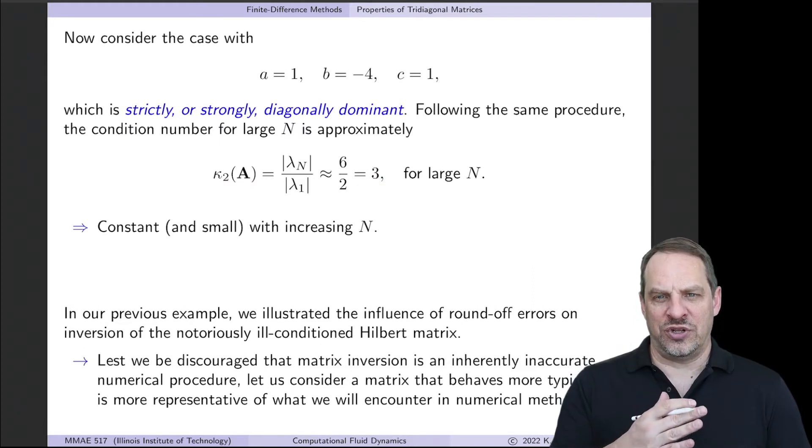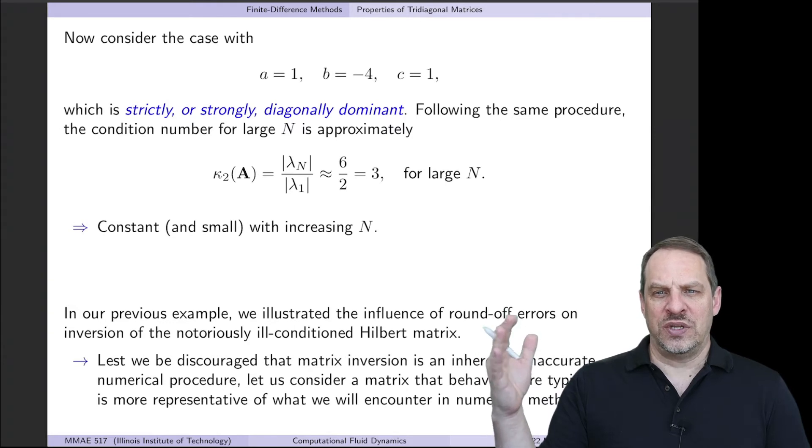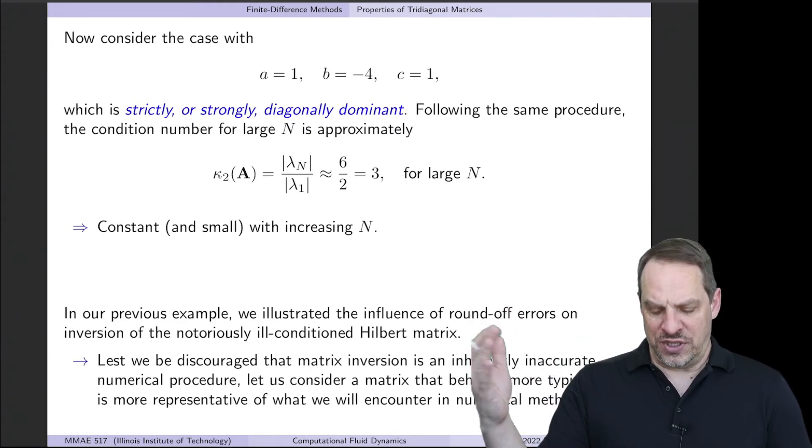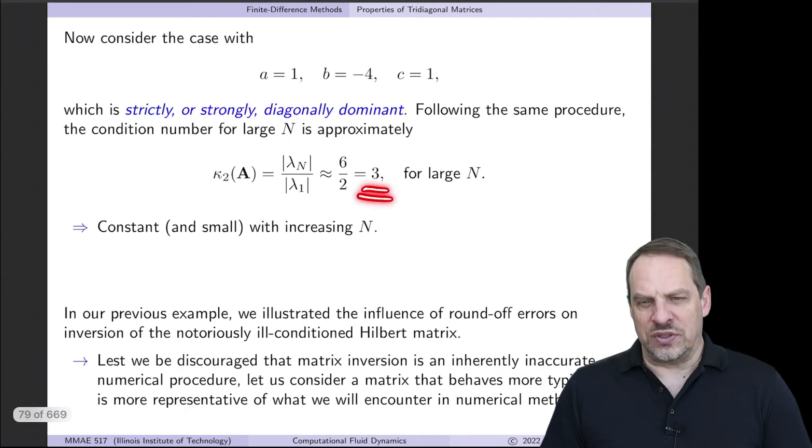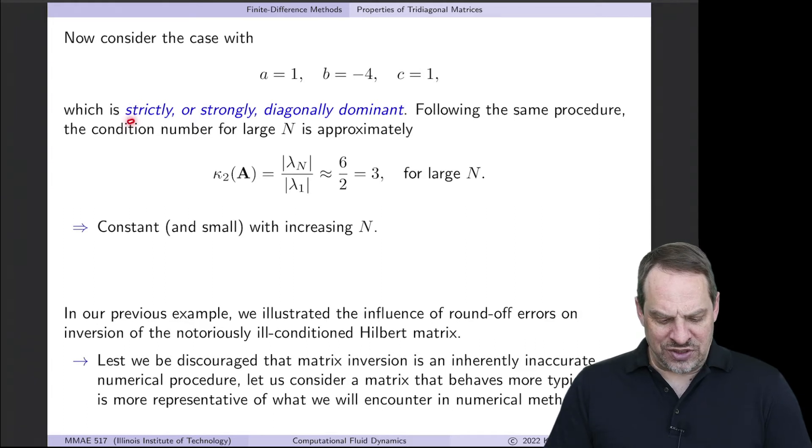So you'll notice it doesn't involve N. So what that means is as N increases, it's going to asymptote to 3. So the condition number will never be any larger than 3. And remember, 1 is a perfect condition number. Infinity would correspond to a non-invertible matrix. And the larger the condition number, the more ill-conditioned it is. So 3 is an excellent condition number. We don't expect to have any issues with numerical operations on this matrix. And again, that's consistent with the fact that this is strictly diagonally dominant.